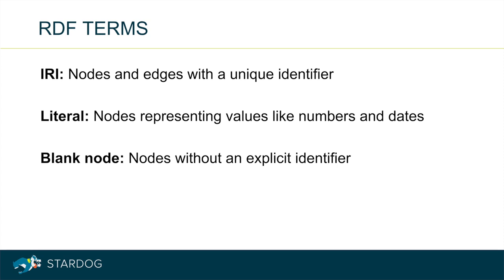There are two different kinds of nodes in an RDF graph. Nodes with identifiers are called IRIs, and IRIs are also used to identify the predicates. The nodes that represent primitive values are called literals. There is also the notion of blank nodes, but they typically cause problems in practice, so we will ignore them for now.